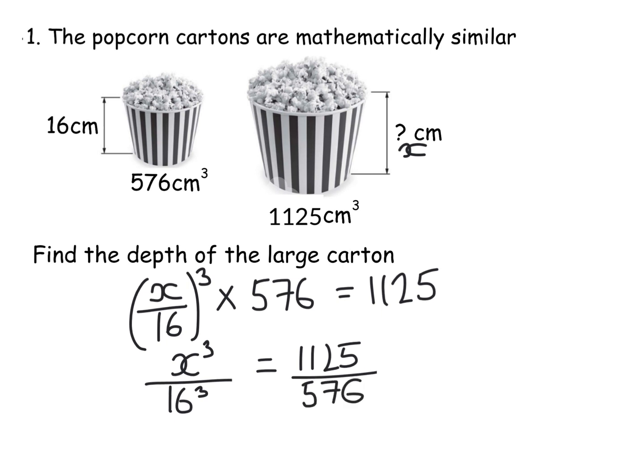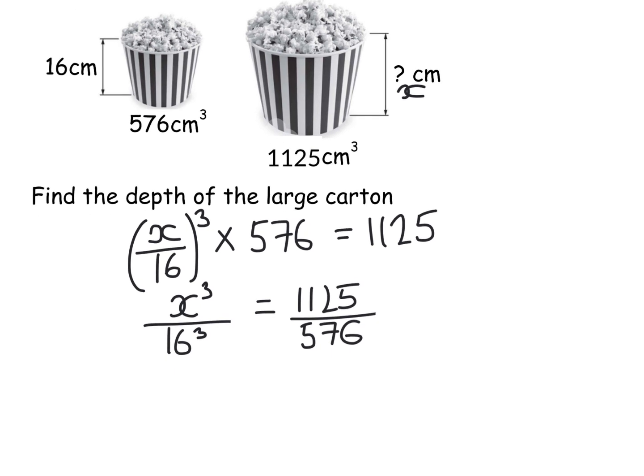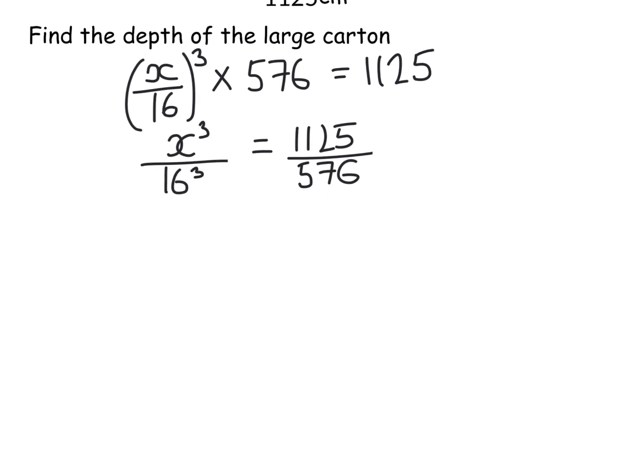Then I would think, right, what do I need to do to get x on its own? Well, I need to move the 16 cubed. So x cubed would be this fraction here times 16 cubed. And then whatever that answer is, I will cube root it.